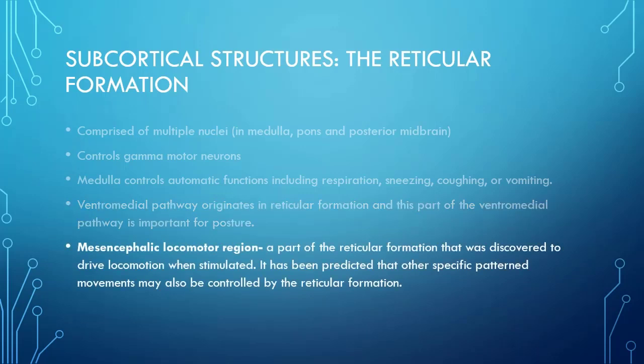There's an interesting component called the mesencephalic locomotor region, discovered a long time ago, which drives generic locomotor behavior when stimulated. This seems like almost a pre-program for a motivated response when we run towards or away from something. This has led to the prediction that there may be programs for various small patterned movements — generic locomotion, vomiting, sneezing — located in this portion of the brainstem and hindbrain.